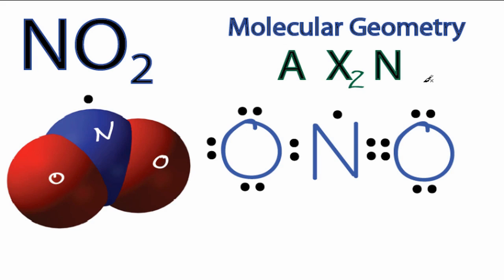We only have one electron there, so let's just count that as a pair, one pair. So we end up with AX2N1. We could know that that is a bent molecular geometry, or we could look it up in a table.